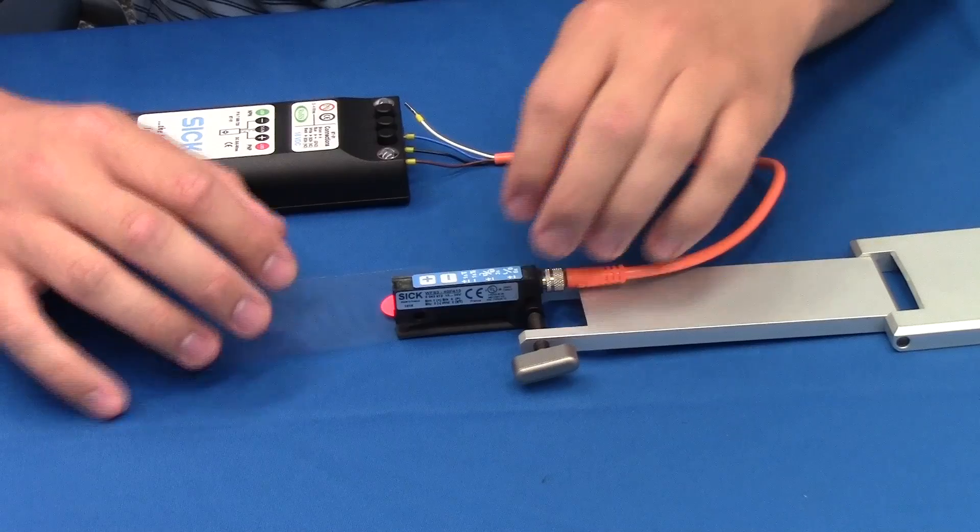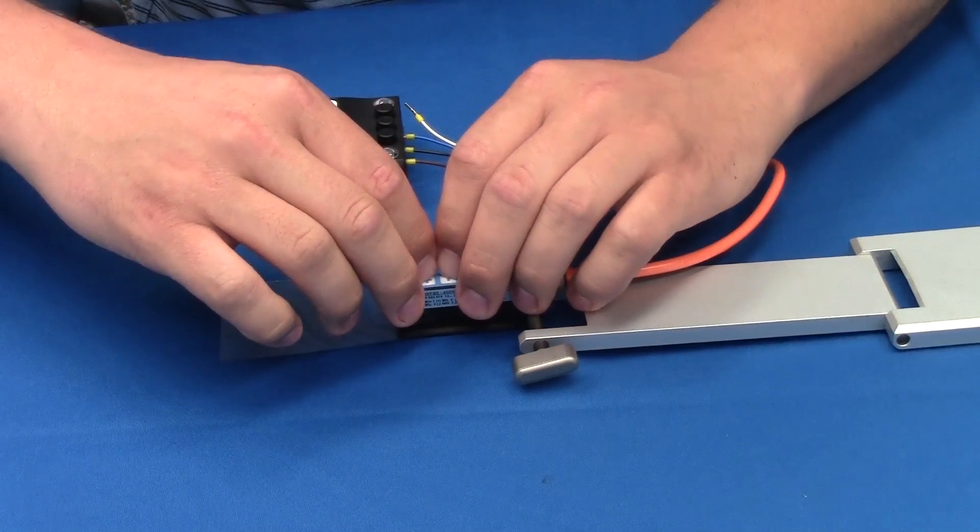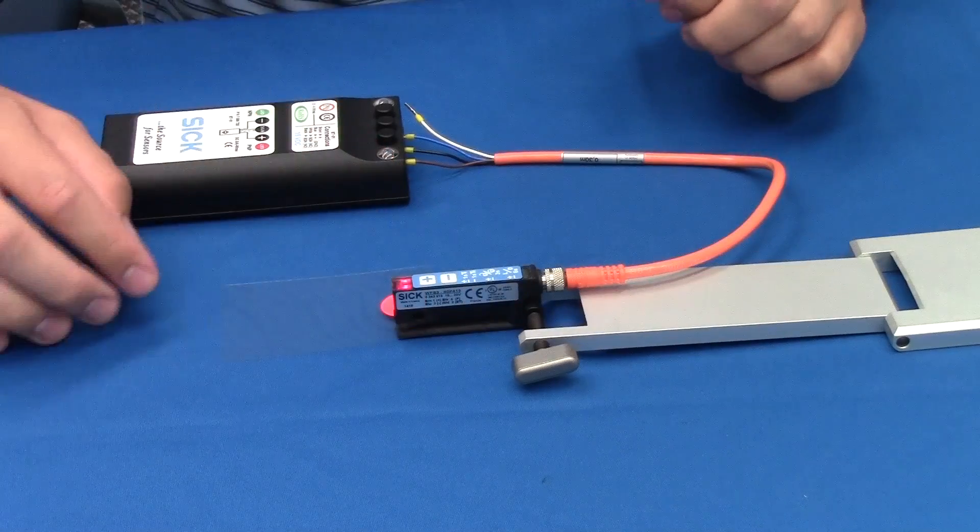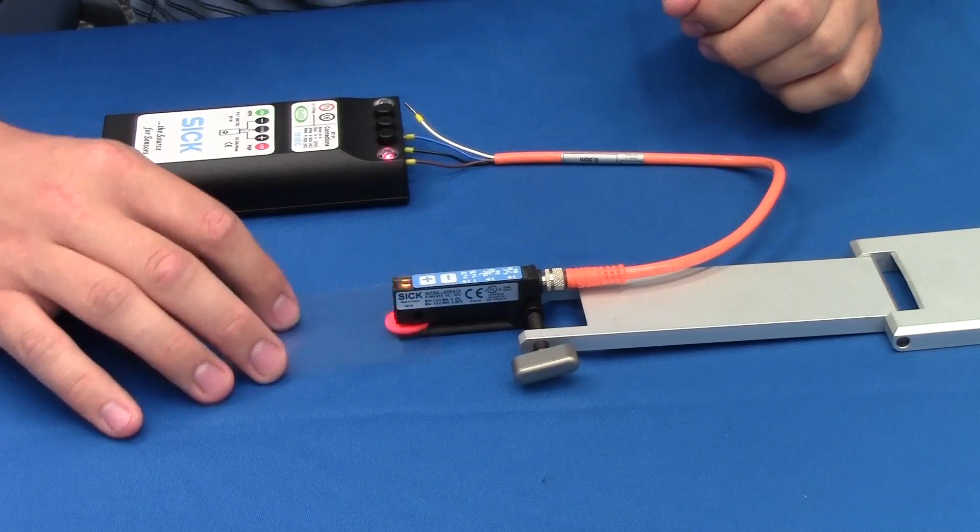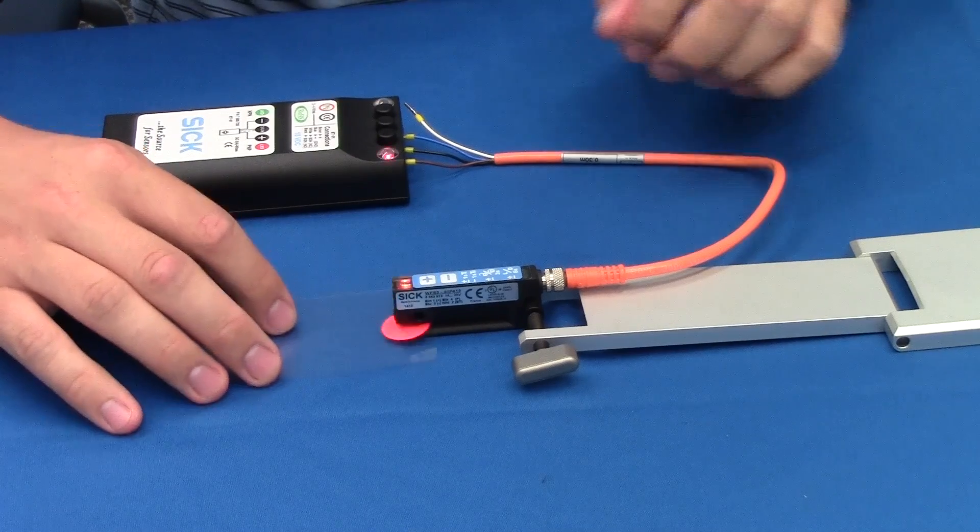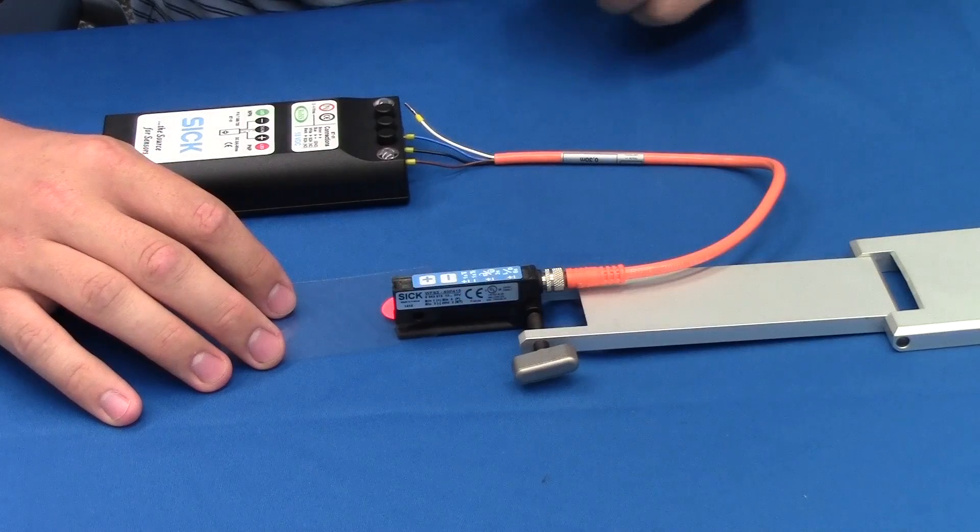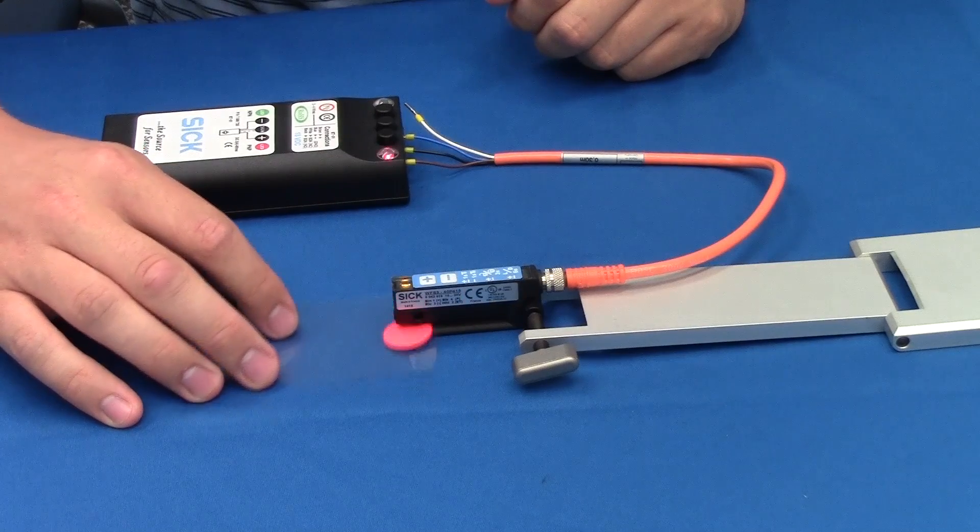To do dynamic teach, we simply push both buttons again for one second, and as the red LED flashes, we move the target in and out of view of the sensor. To complete the process, we push the minus button, and once again the sensor is taught.